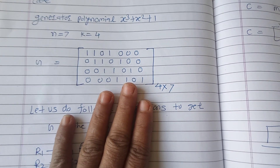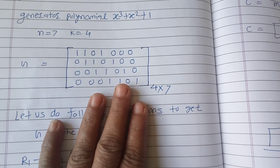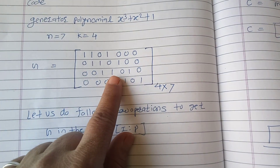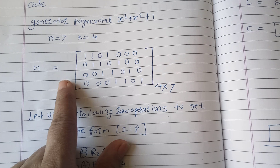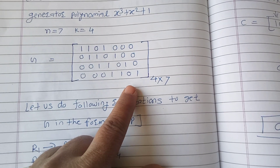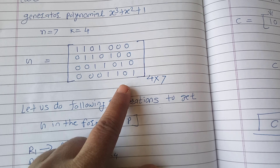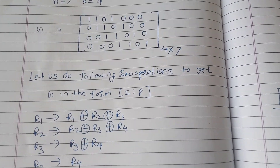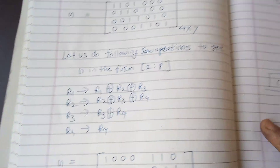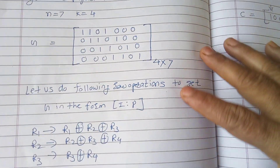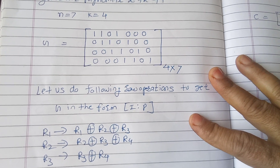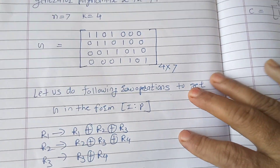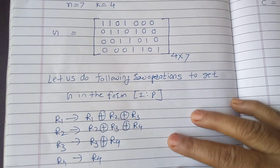This is the generator matrix, but with this generator matrix you will get a non-systematic cyclic code. You can get the cyclic code with this generator matrix by multiplying it with the message word, but the code you get is a non-systematic code. To get the systematic code, we need the generator matrix in systematic form, so we have to do row operations — as studied in the matrix chapter — to get the identity form.